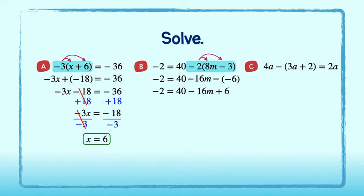Great. Now, I want to combine like terms. The 40 and the 6 are like terms. 40 plus 6 is equal to 46. The negative 16m is not like any other term, so I'll copy it down. And don't forget about that negative 2.